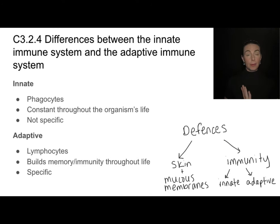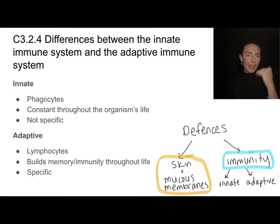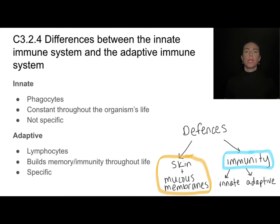Thinking holistically about how our body defends itself against pathogens, we've got a couple of different options. We just talked about that primary defense system — skin and mucous membranes — which is different from our immune system. Immunity is not the same thing as that primary defense. Even within immunity, we have two types: an innate immune system and an adaptive immune system.